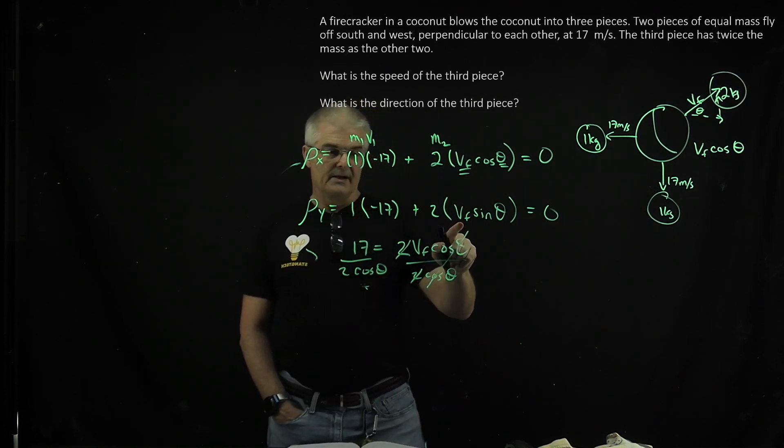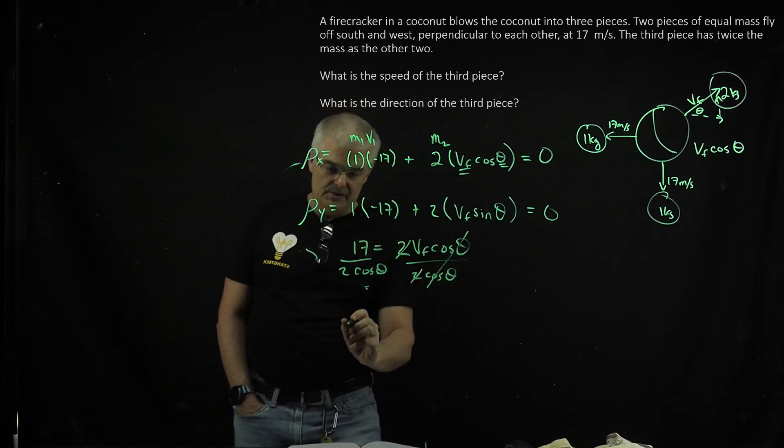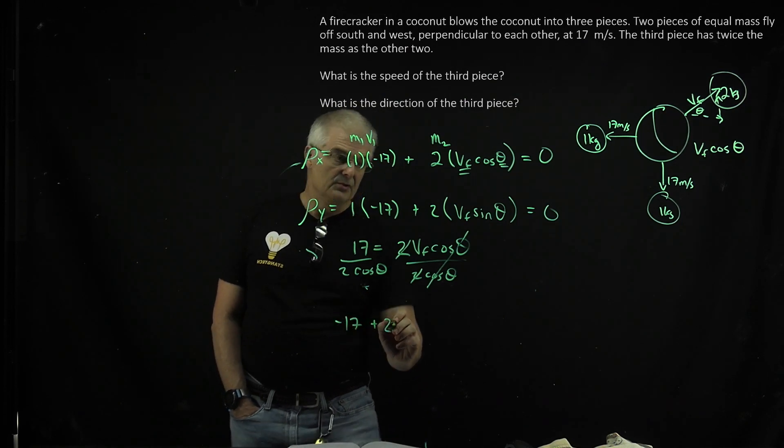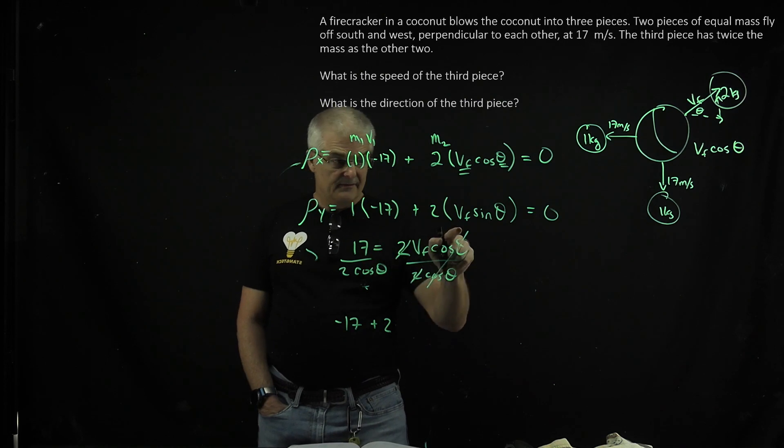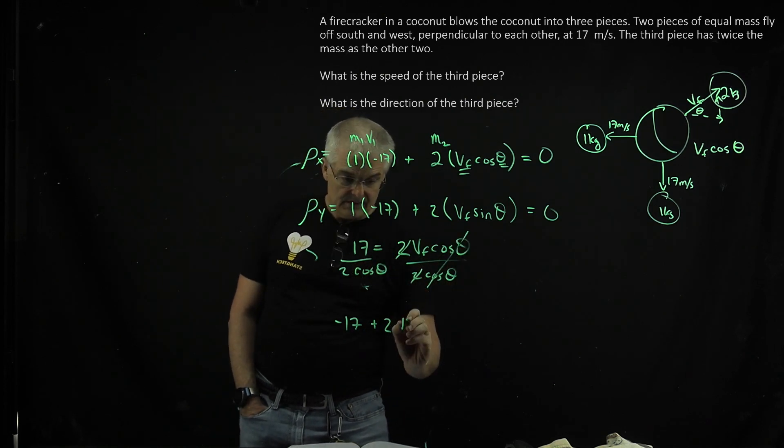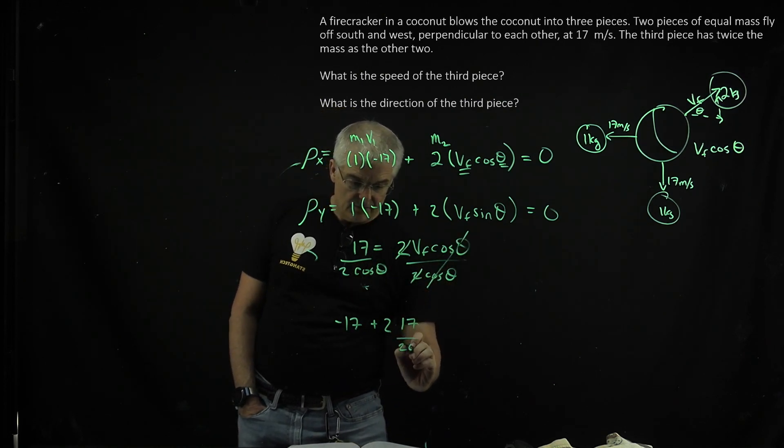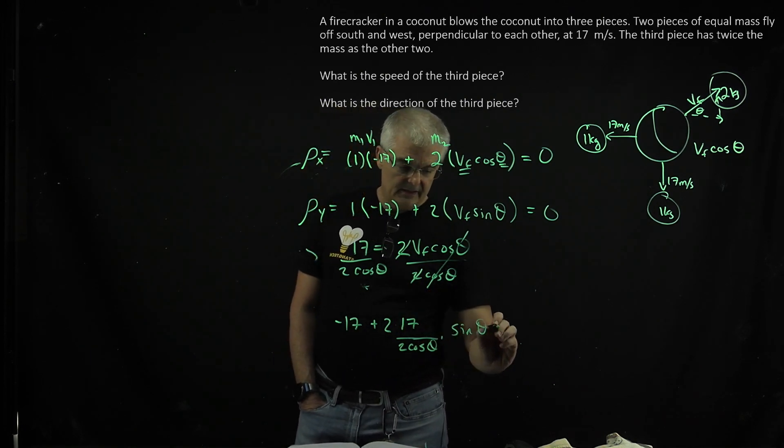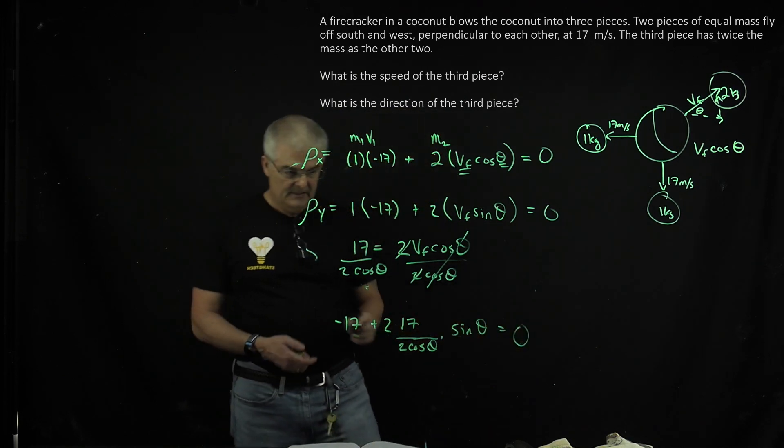So I can plug that in here. Does that make sense? So then I can say, I want to set this, write this equation, I'll say negative 17 plus two times, and vf is this, 17 over two cos theta times sine theta equals zero. Boom.